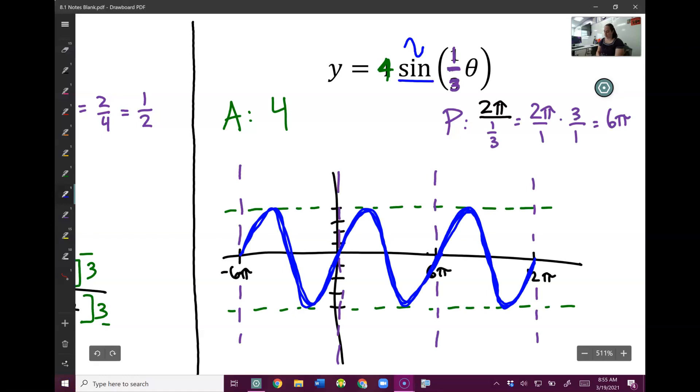Let's see how you did. Amplitude is the number in front. That's a 4. Period is the number inside. So 2π divided by 1 third. We do leave, flip, change. Leave the numerator, flip the denominator, change it to multiplying. 2π times 3 is 6π.